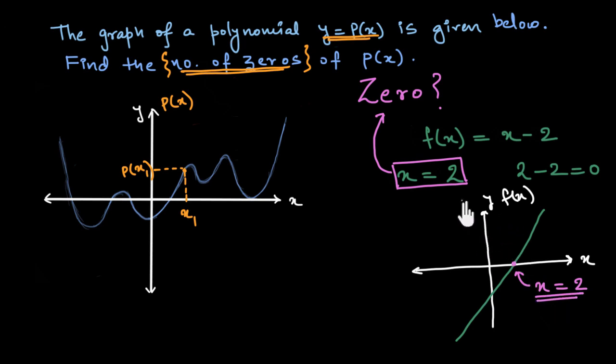So for this corresponding x value, that is x equals to 2, the value of the polynomial is 0. Hence this is the zero of the polynomial. Having said that, now let us come back to the graph that we actually have here. So the question is, what are those points where p of x is equal to 0?